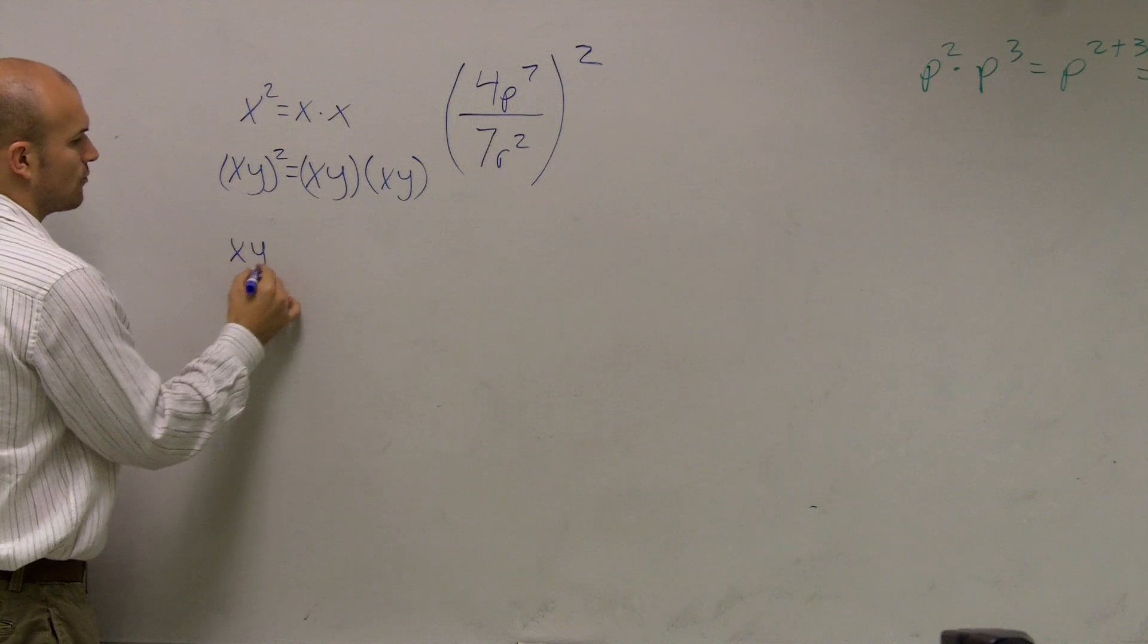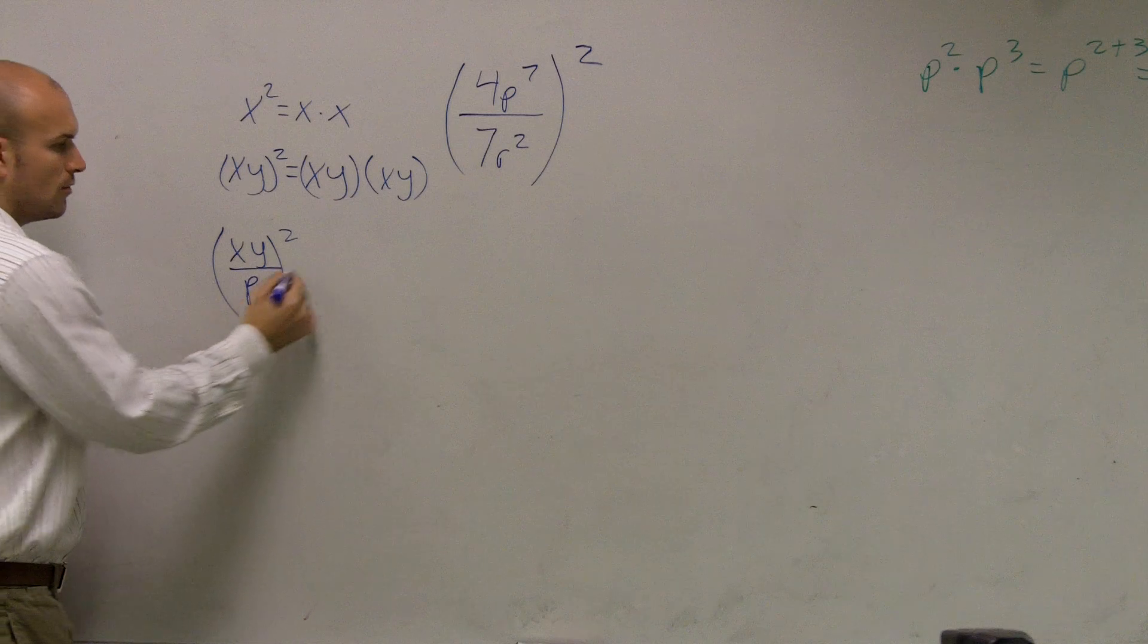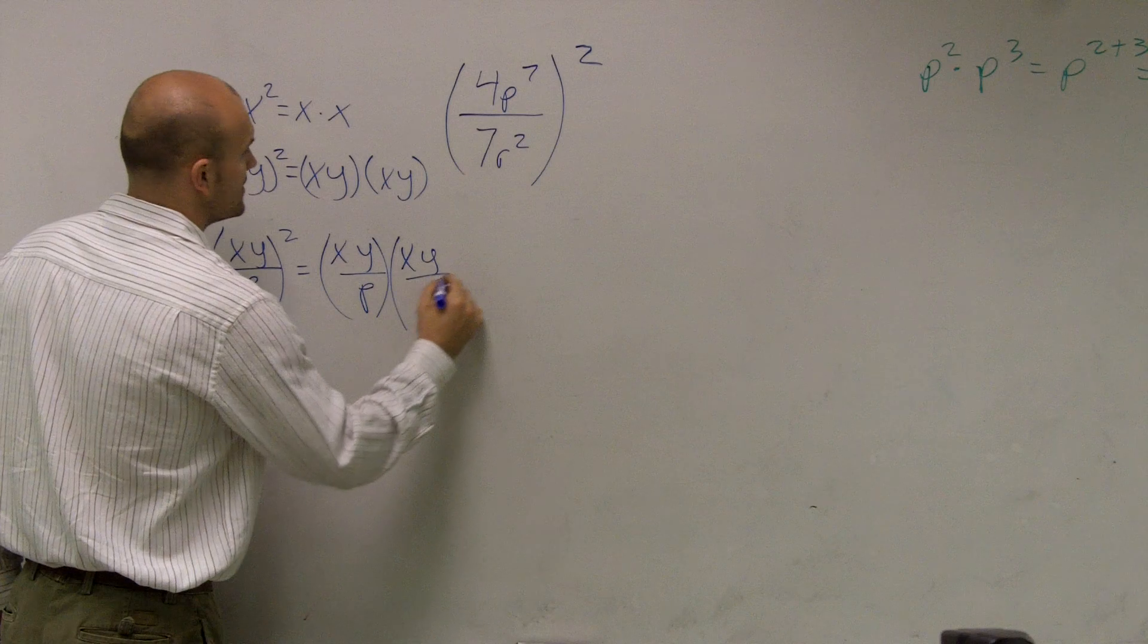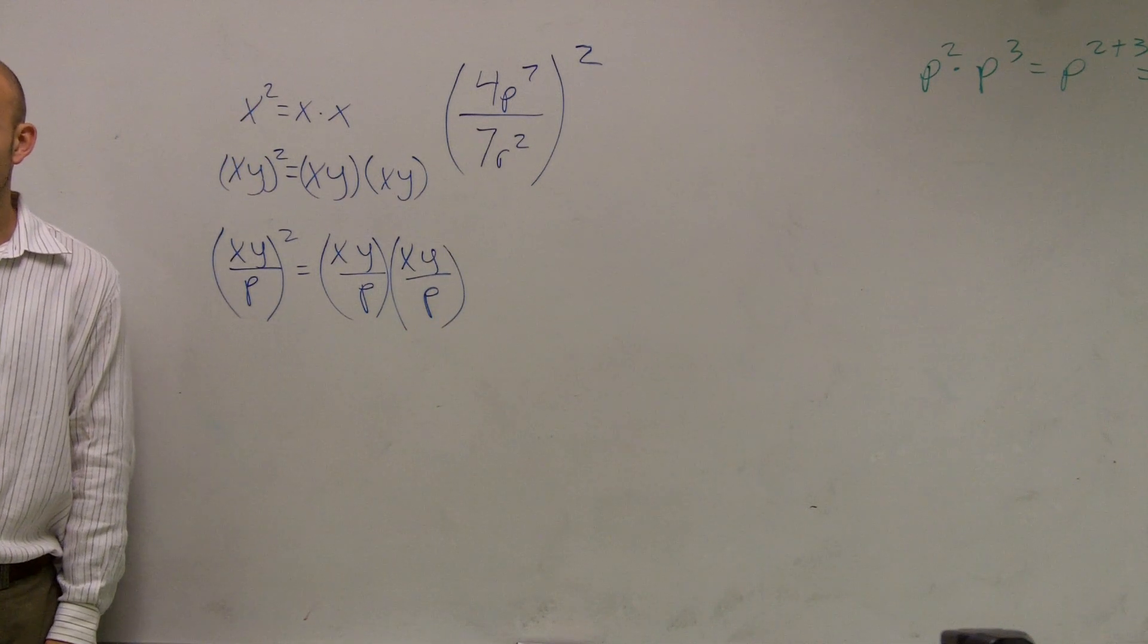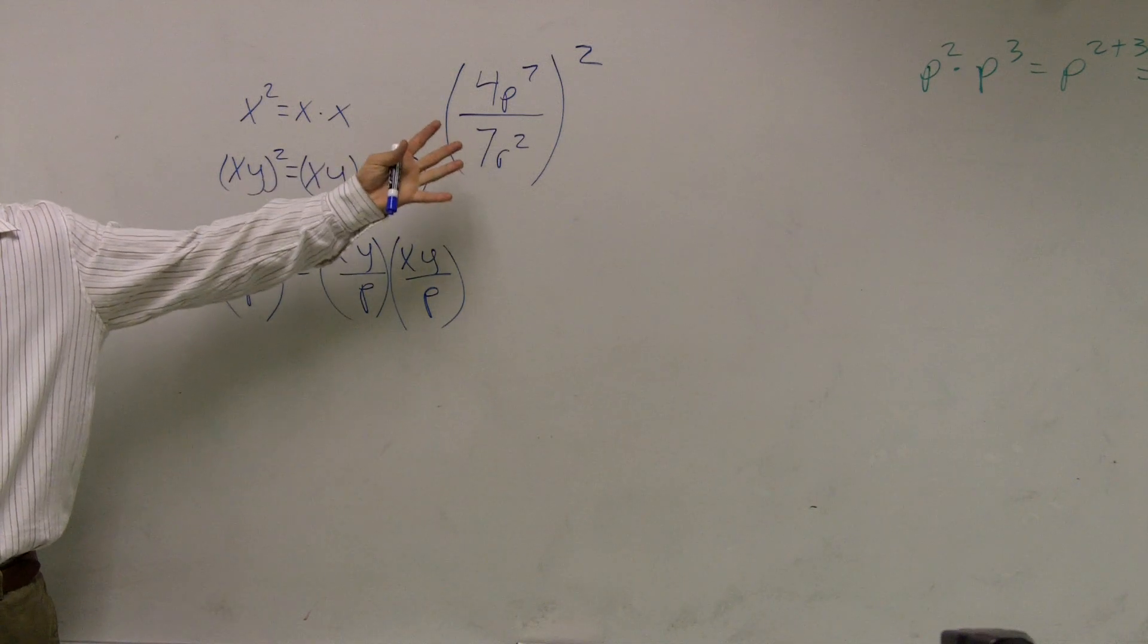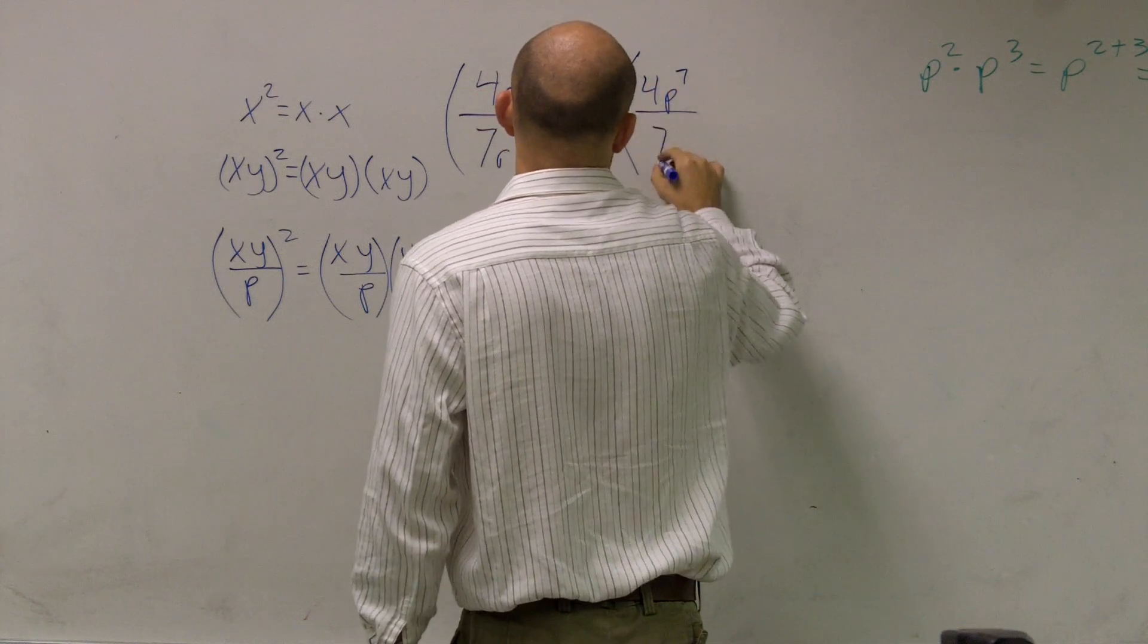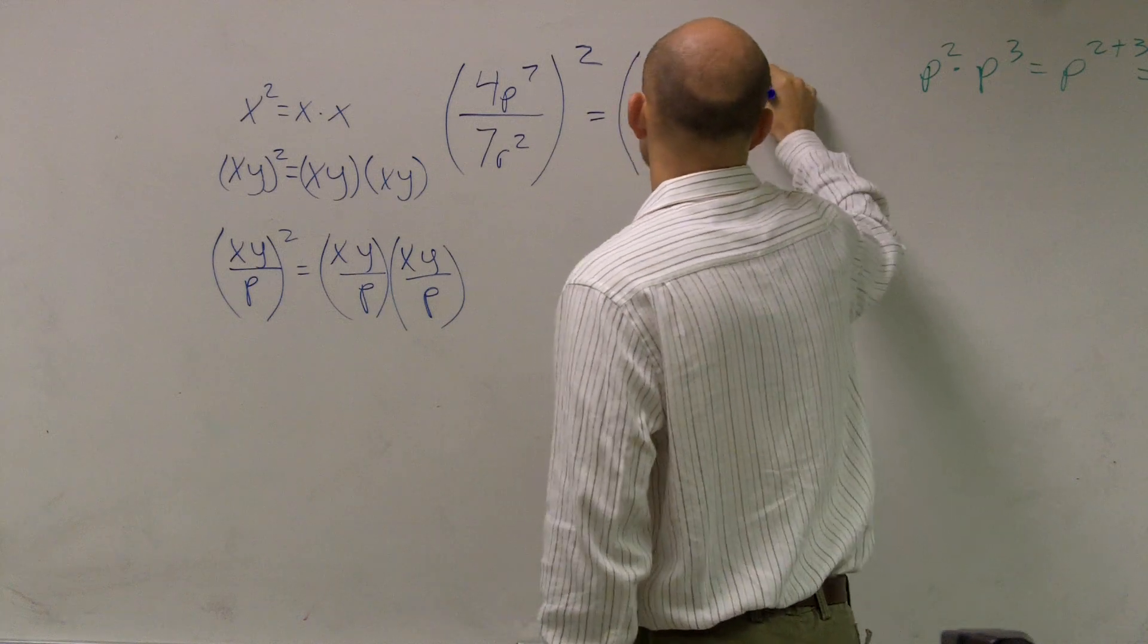If I have xy over p squared, what that means is you take xy over p and you multiply it by xy over p. Does anybody see that? Really, ladies and gentlemen, all I'm doing with the squaring, don't make this more difficult than it has to be. All you can just do is rewrite this as 4p to the 7 over 7r squared times the same thing.